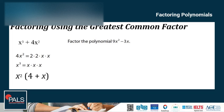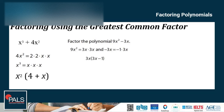Factor the polynomial 9x squared minus 3x. First, find the shared factors. For 9x squared, the factors are 3x times 3x. And negative 3x is negative 1 times 3x. So both of them share 3x as a factor. Rewriting using the GCF, we have 3x times the quantity (3x minus 1).